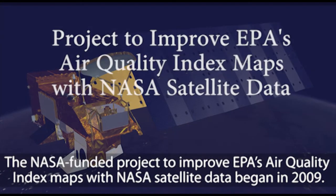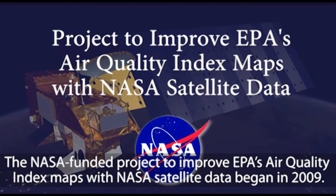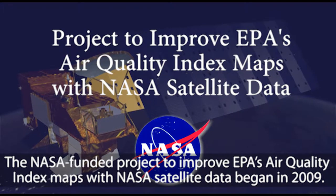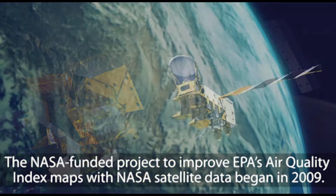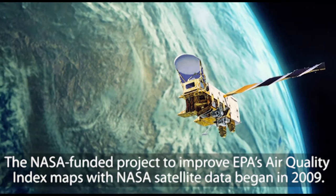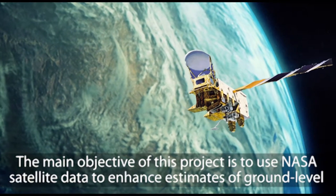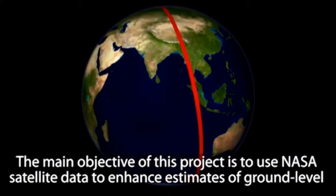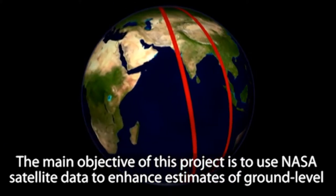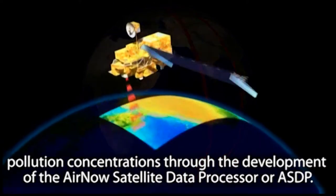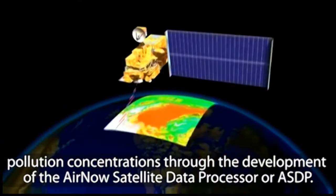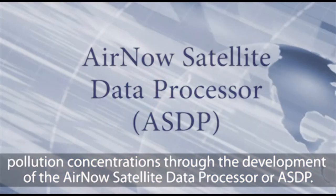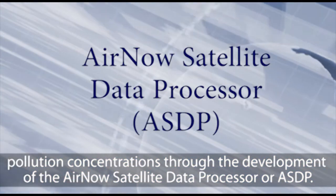The NASA-funded project to improve EPA's Air Quality Index maps with NASA satellite data began in 2009. The main objective of this project is to use NASA satellite data to enhance estimates of ground-level pollution concentrations through the development of the AirNow Satellite Data Processor, or ASDP.